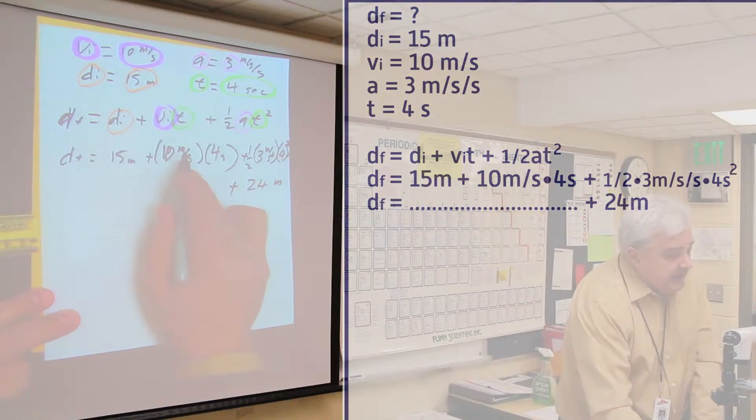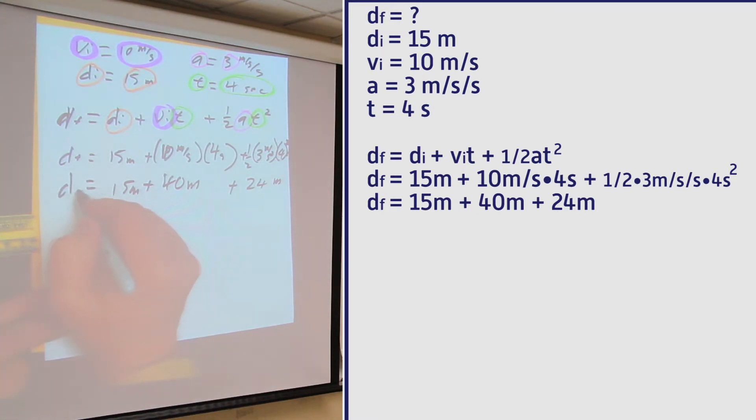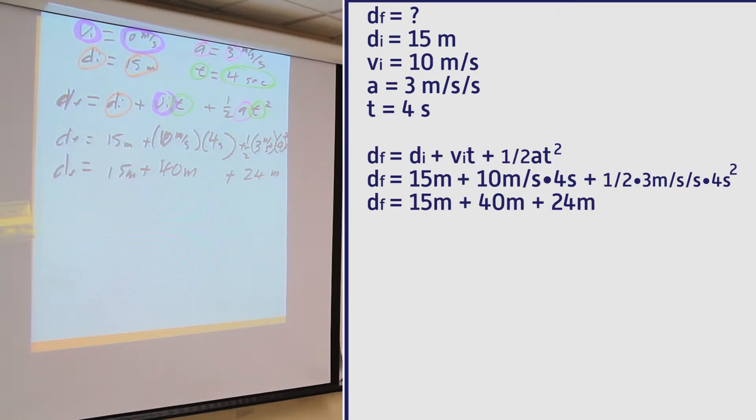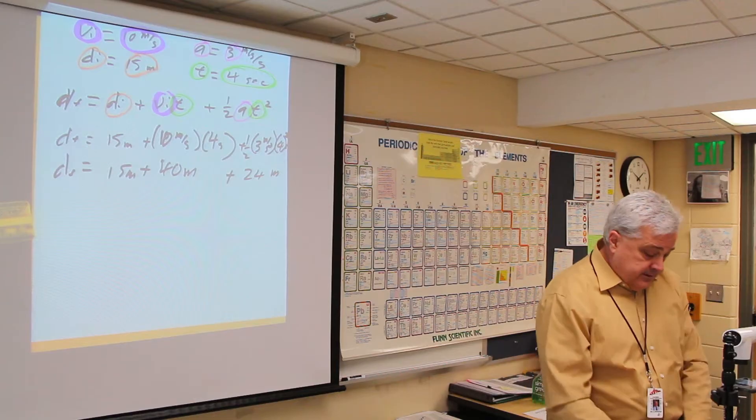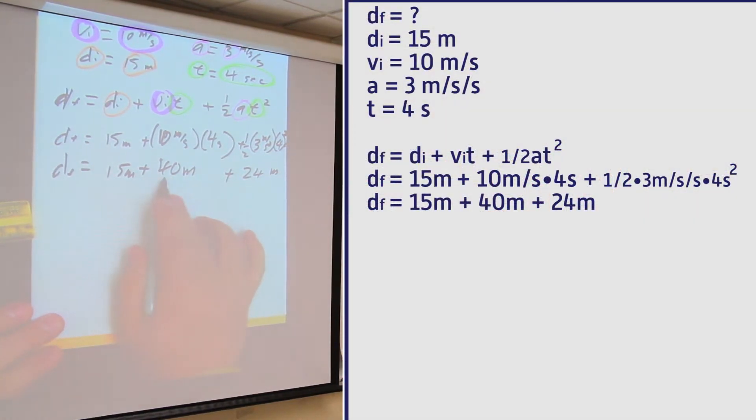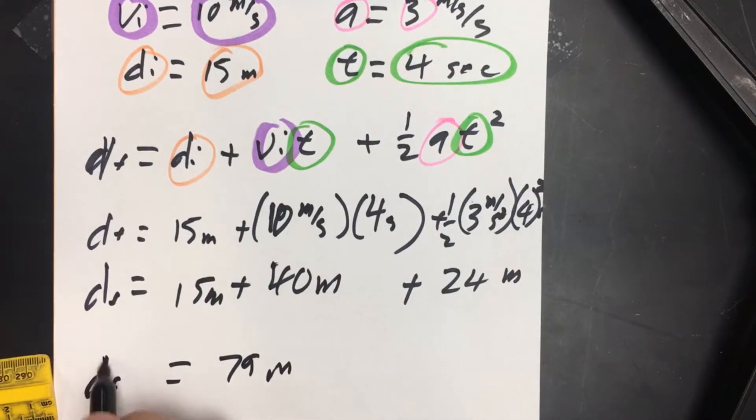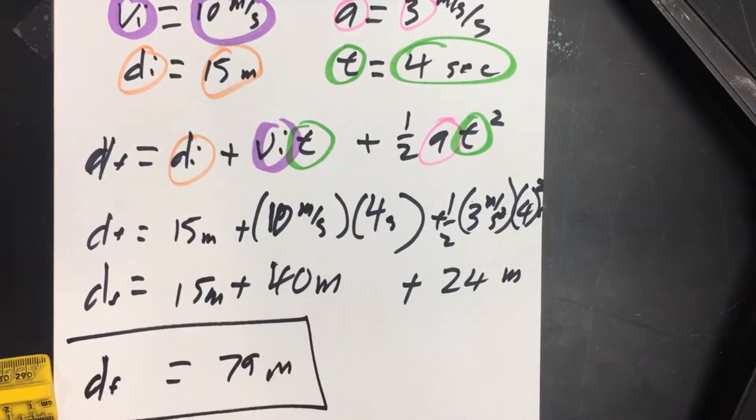Here I have 10 times 4 is 40, the seconds are going to cancel and leave me with meters. 10 times 4 is 40 meters, and here I have 15 meters, and that is equal to our final distance. 15 plus 40 is 55, 55 plus 24 is 79 meters. D sub f equals 79 meters. There you go, example problem solved.